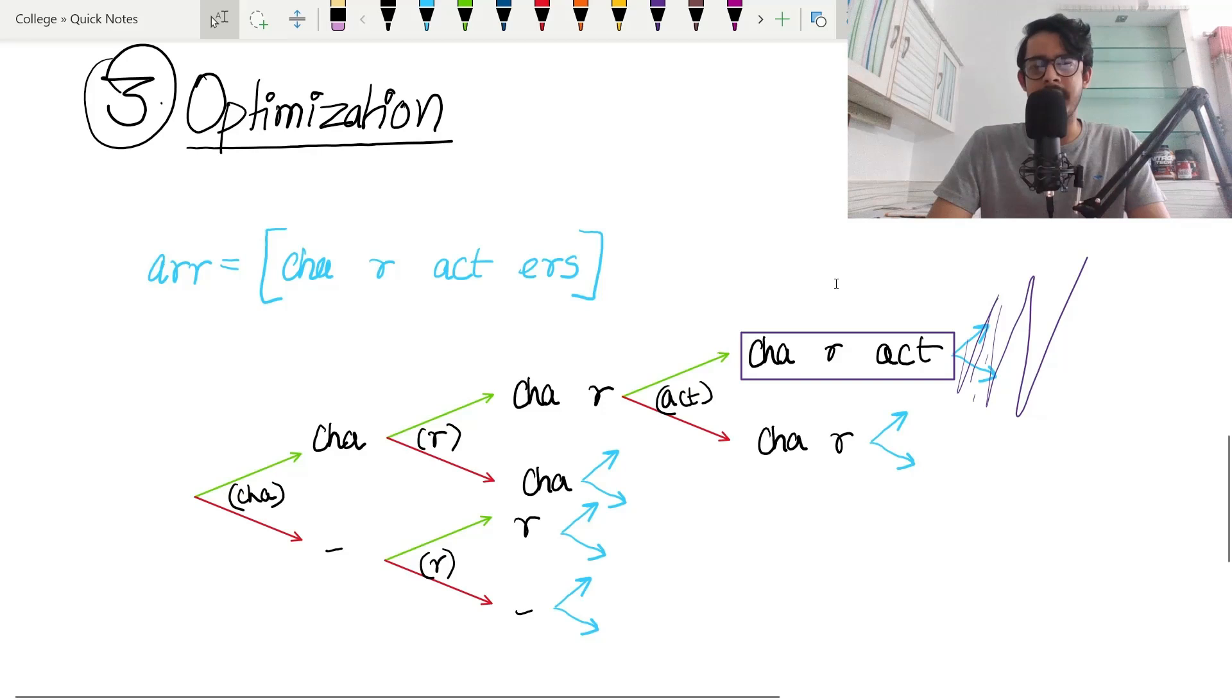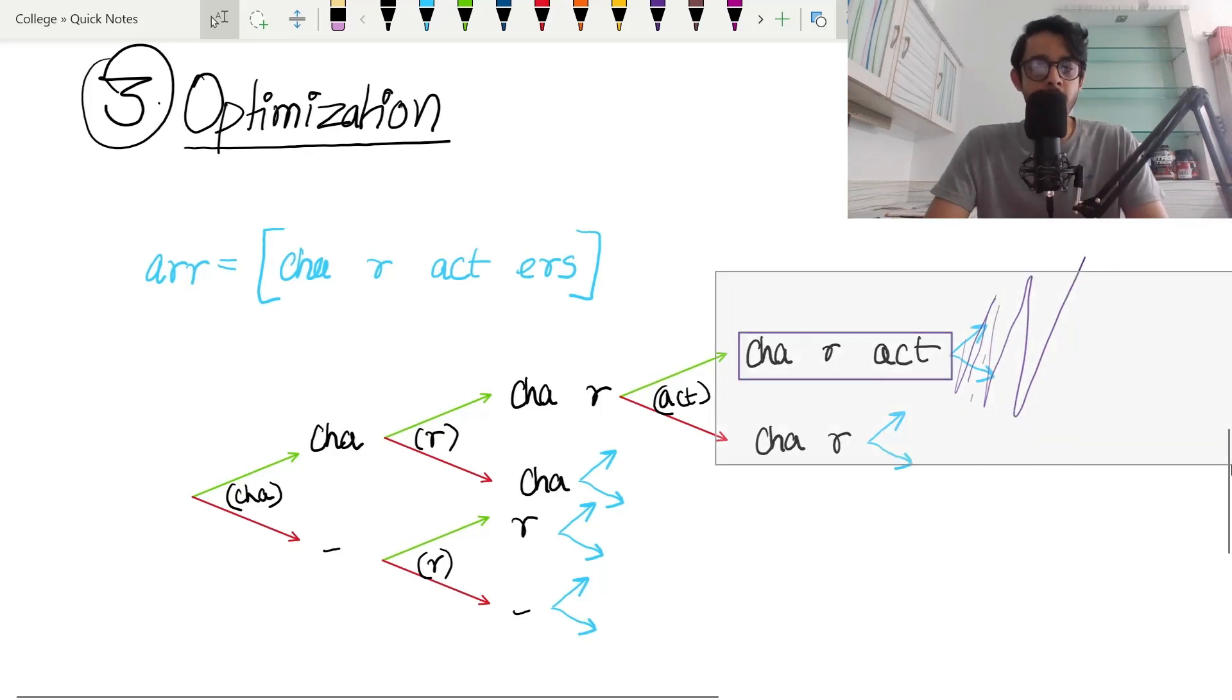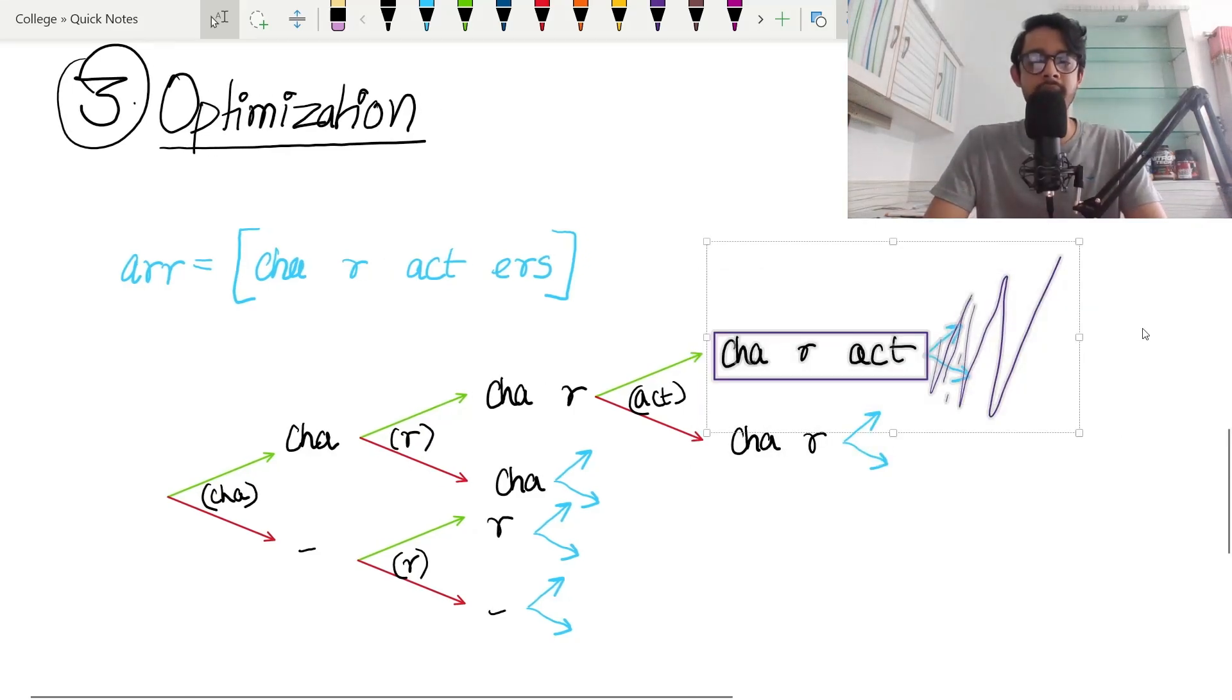In other words, we can just kill off this recursion. We can just not do this recursion and that will save us a lot of space and time.